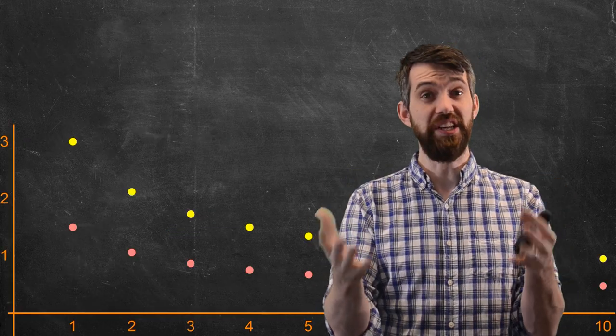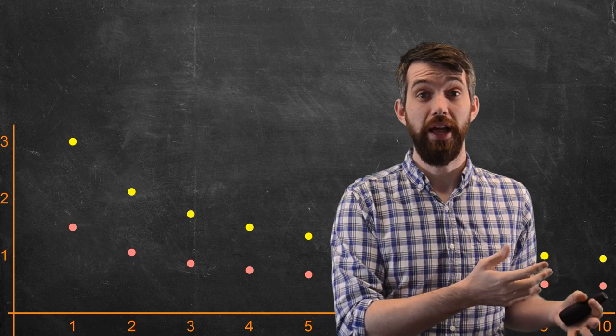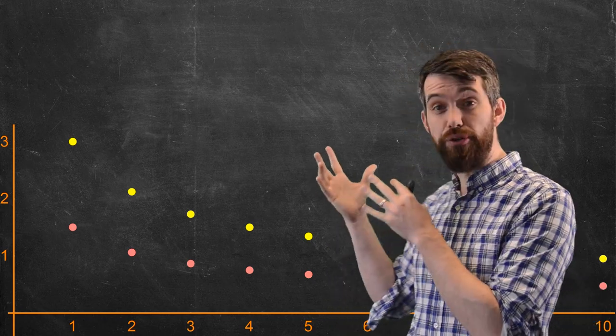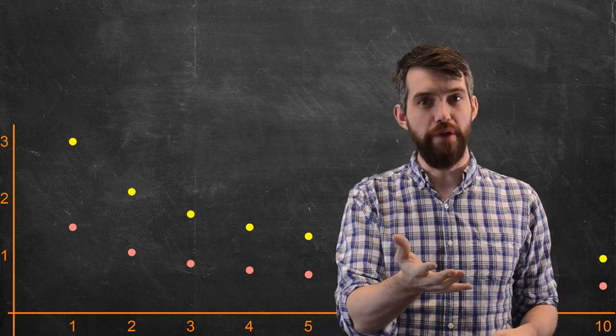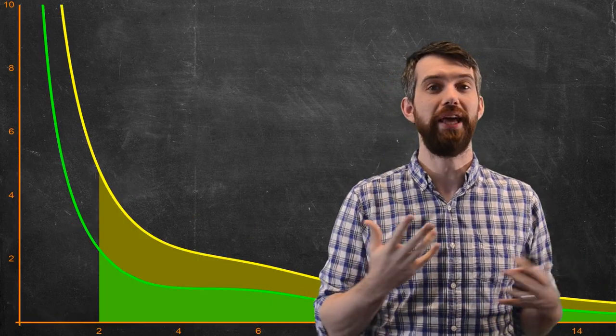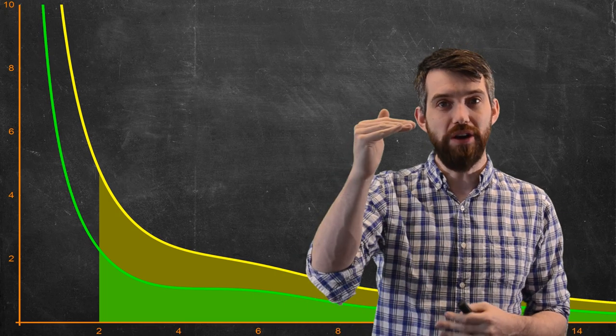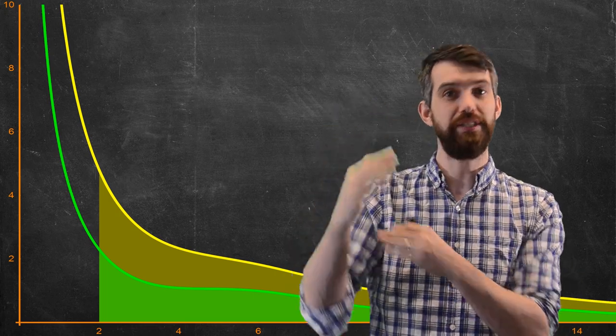Finally, I want to point out that we've seen a comparison test before. If this comparison test applied to series where I had a bigger BN and a smaller AN, we've also seen one for improper integrals. We had a picture somewhat like this, where you had a bigger function and a smaller function.